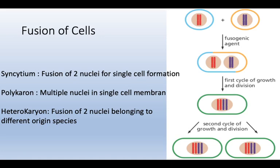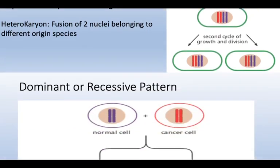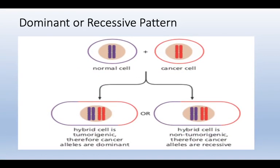Upon the fusion, the first mitosis begins, which leads to the retention of these chromosomes. However, in subsequent generations, certain chromosomes may slough off for unknown reasons.